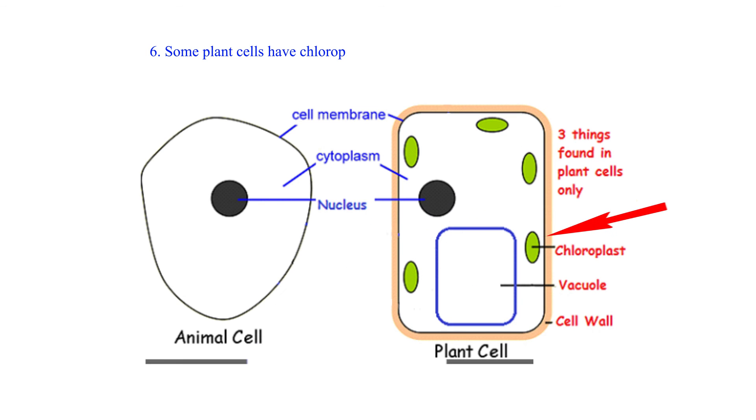6. Some plant cells have chloroplast but animal cells don't have chloroplast.